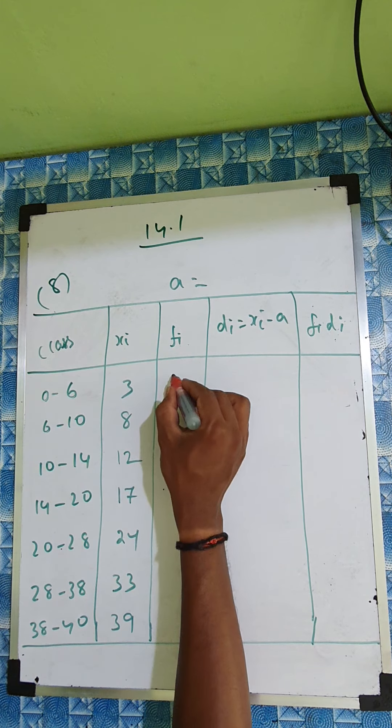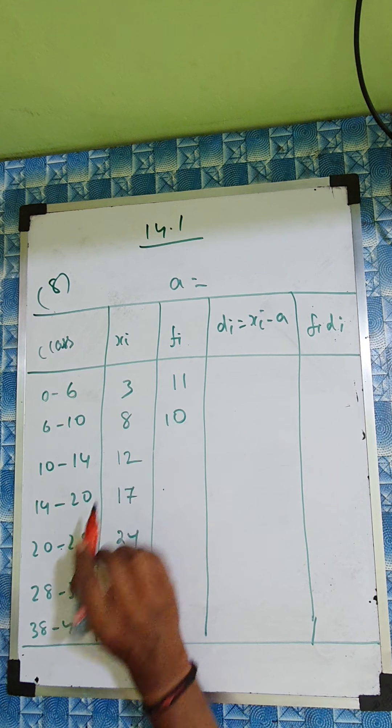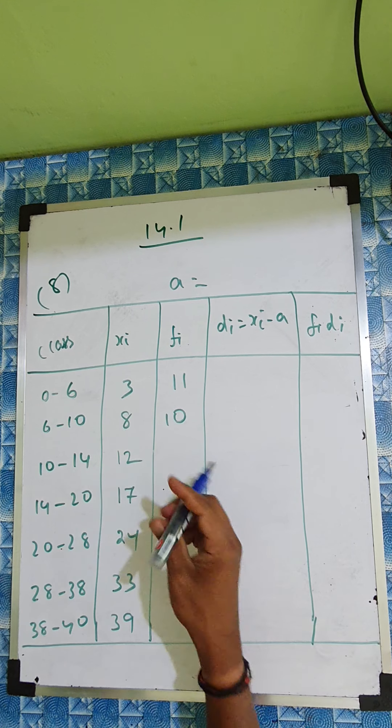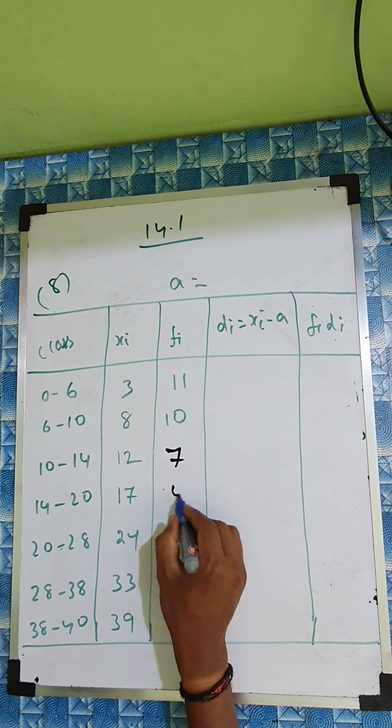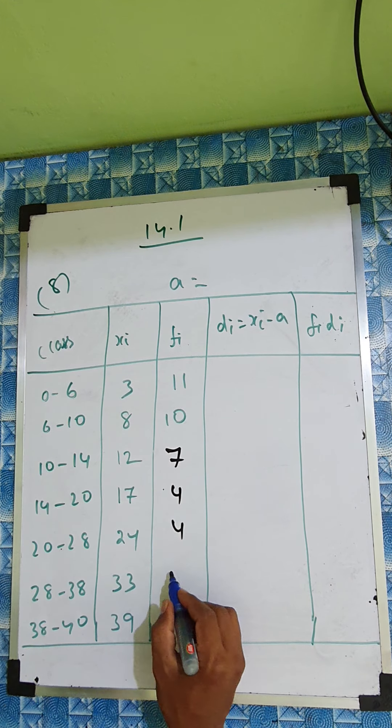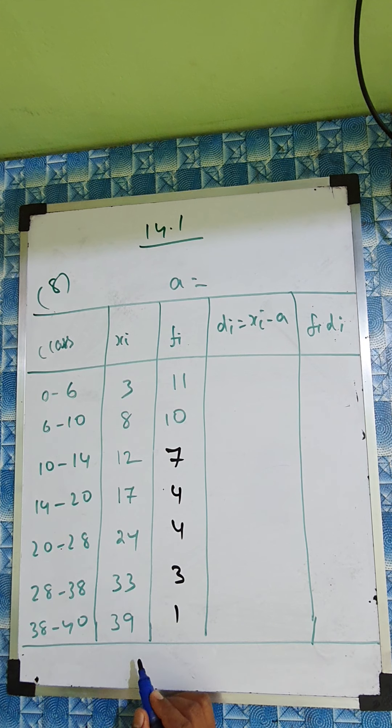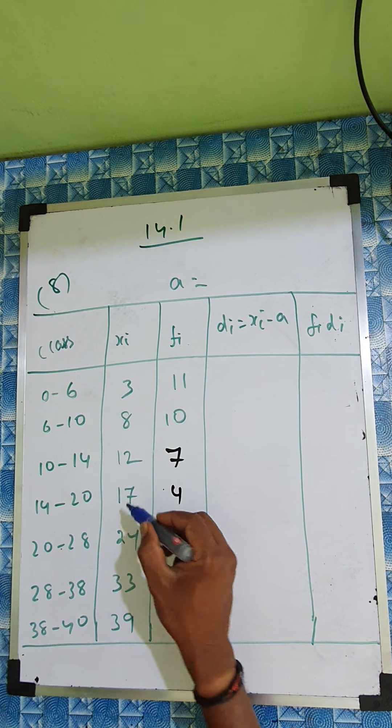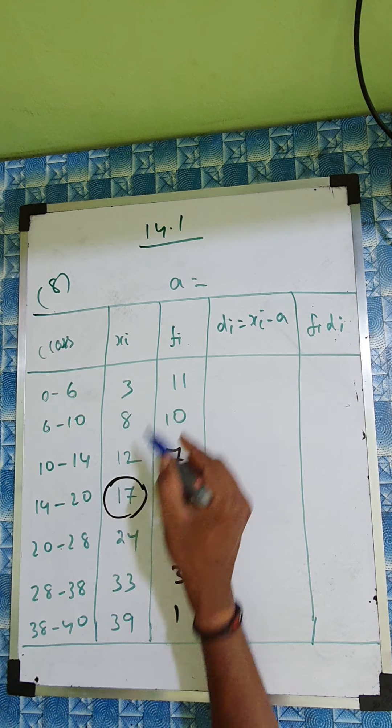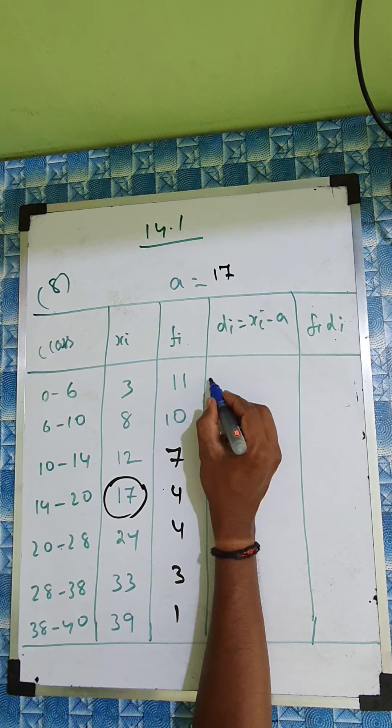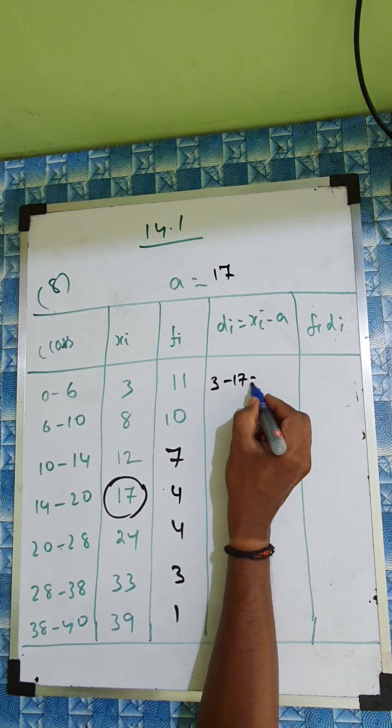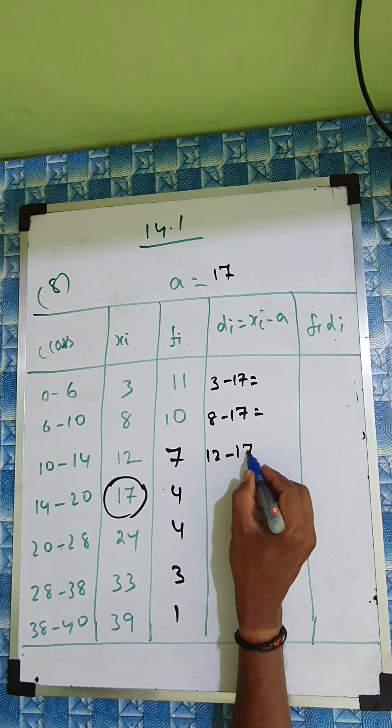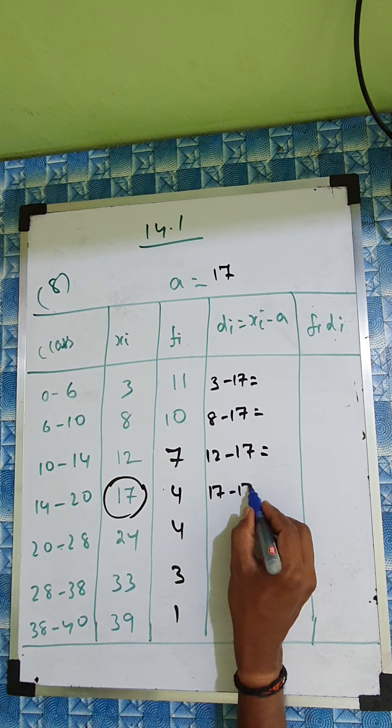And fi is given: 11, 10, 7, 4, 4, 3, 1. And a we'll take from here - one, two, three - so we'll take a is 17.